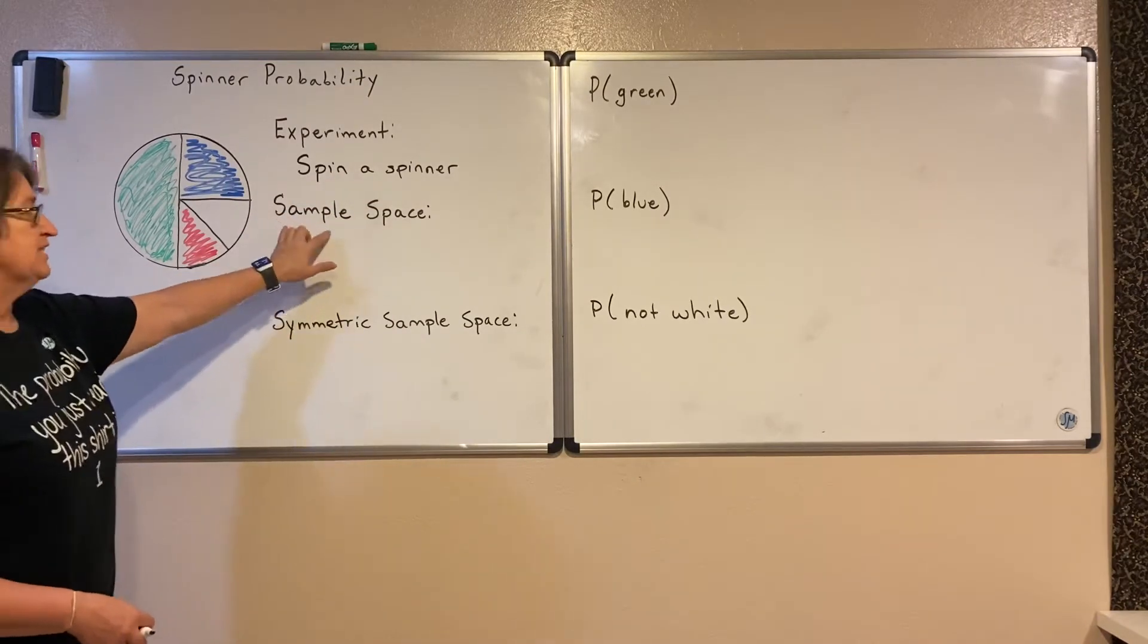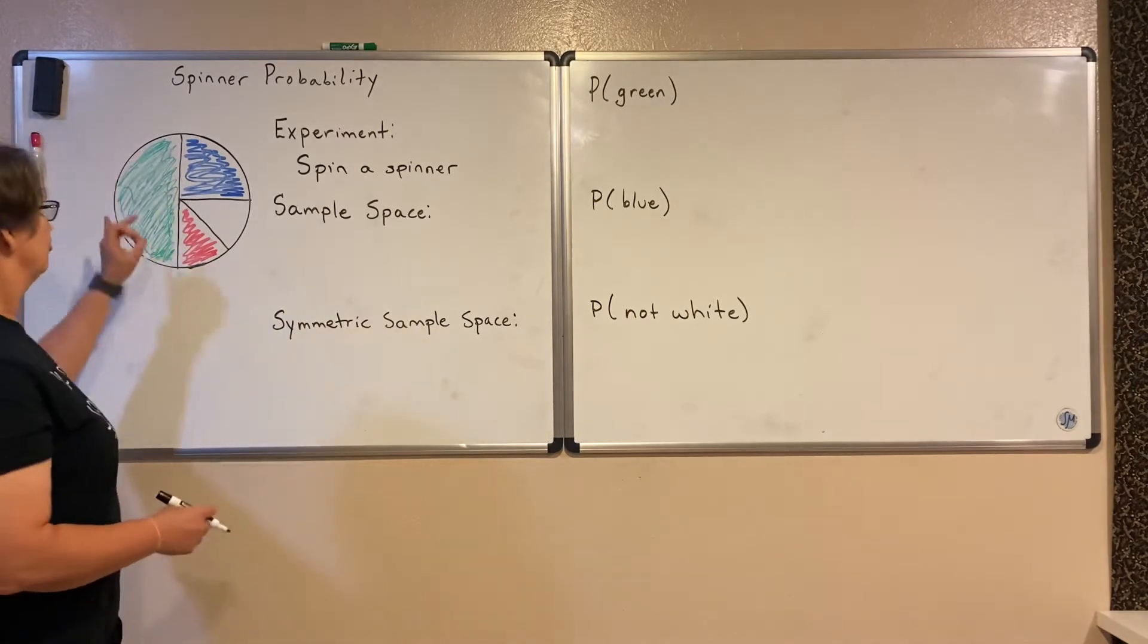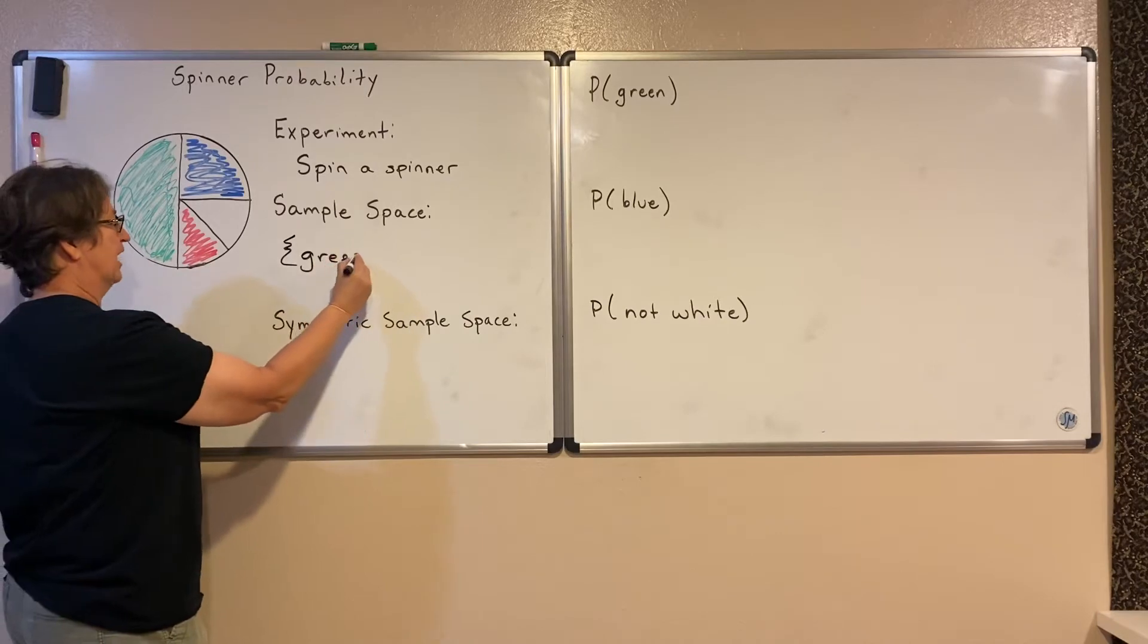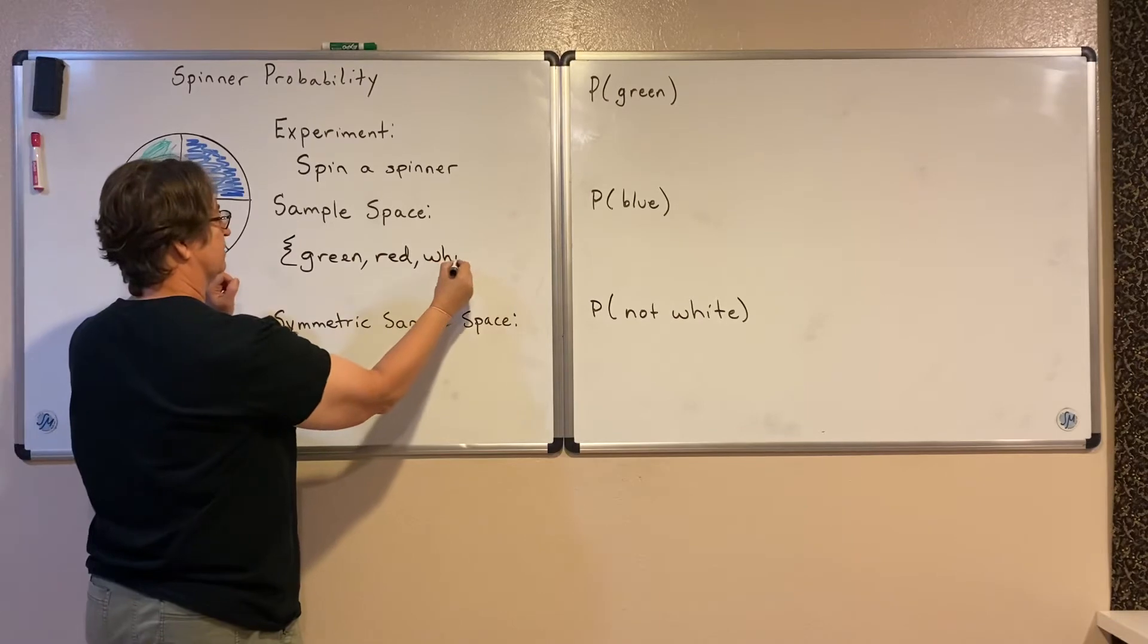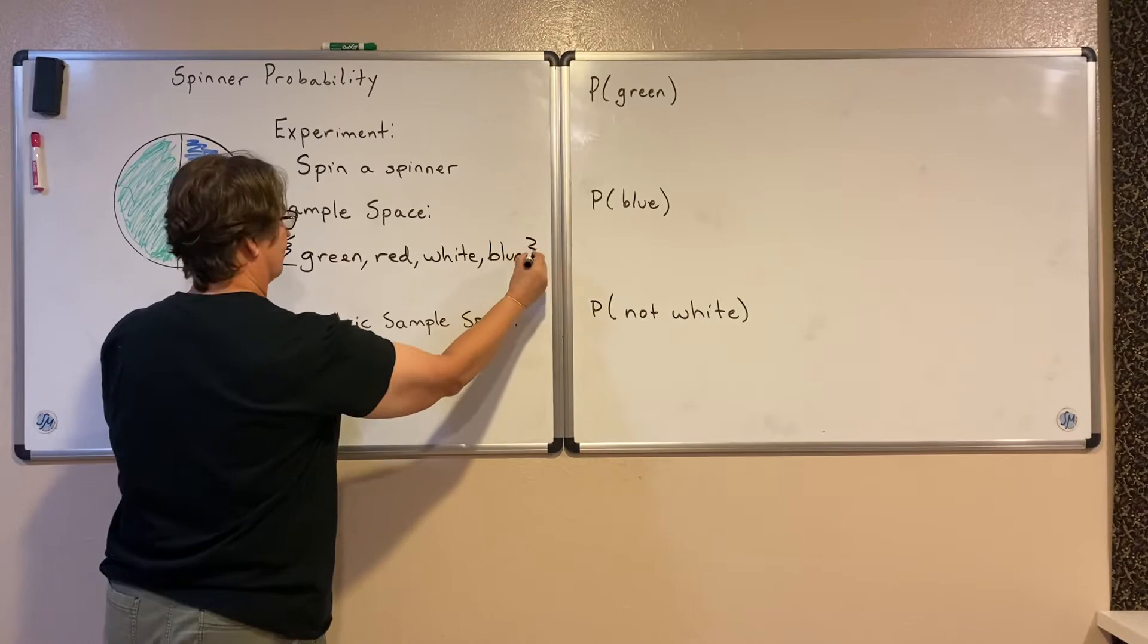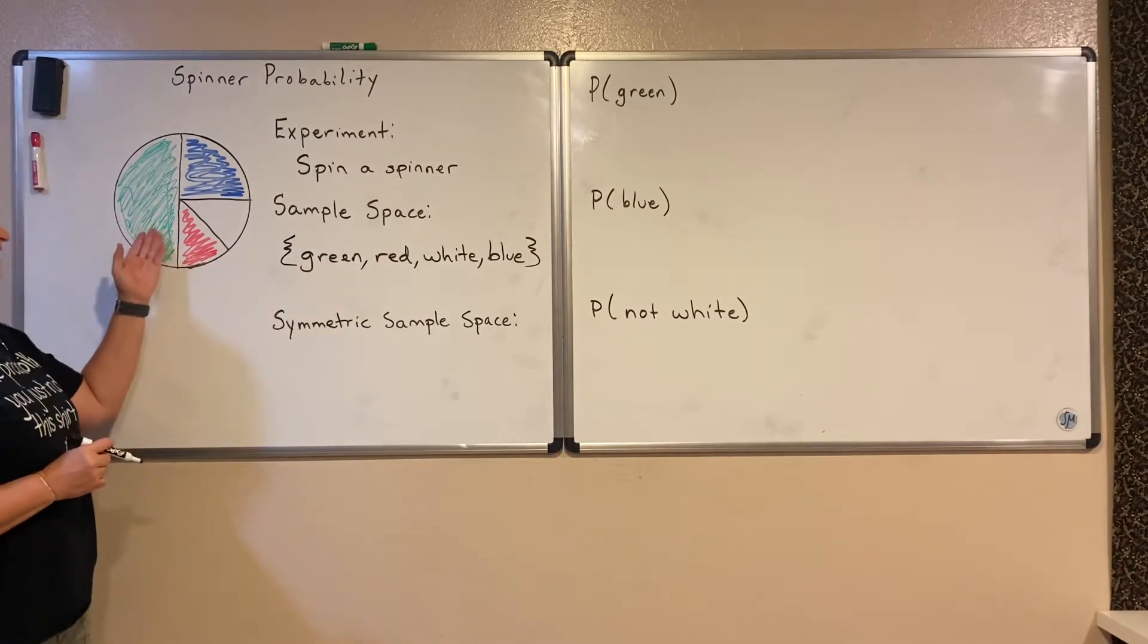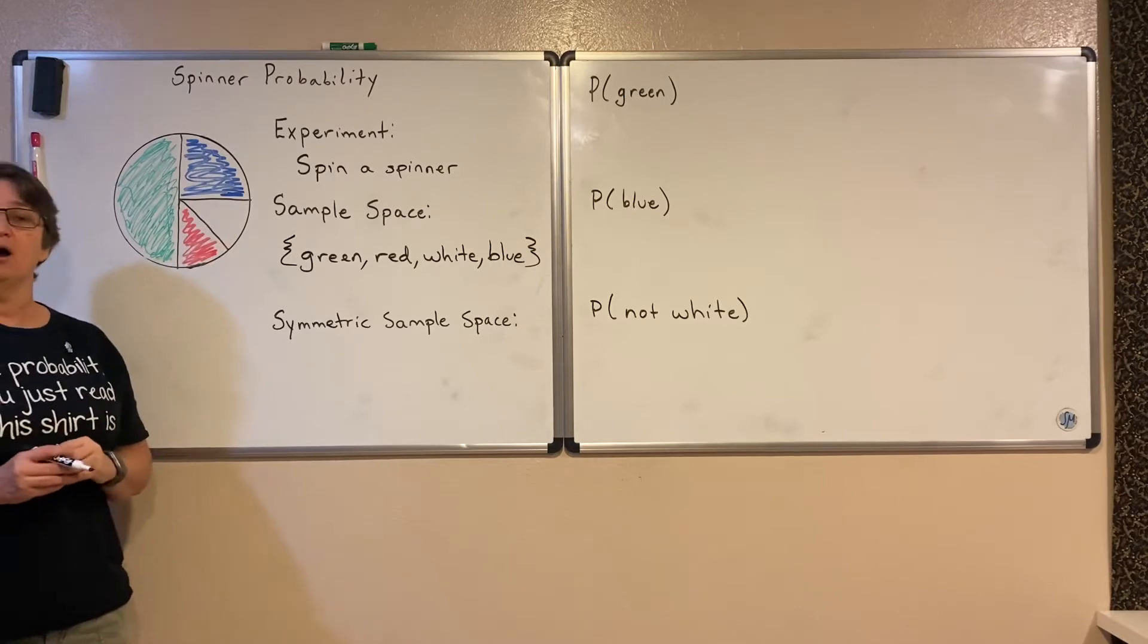I want to know what is the sample space. Well, the sample space are all the possible outcomes. So if I spin this spinner, what could happen? I could land on green, I could land on red, I could land on white, or I could land on blue. The question is, is each one of those equally likely? Is it just as likely that I land on green as I land on white? Are those the same probabilities?